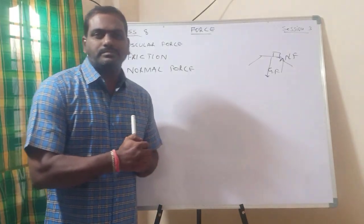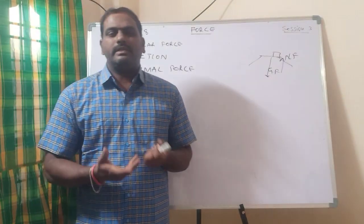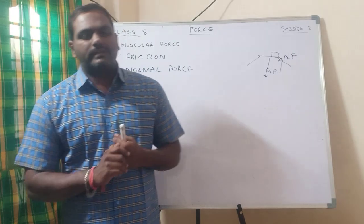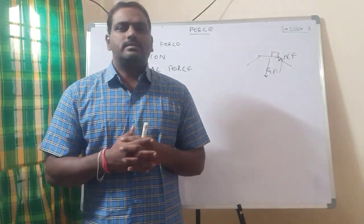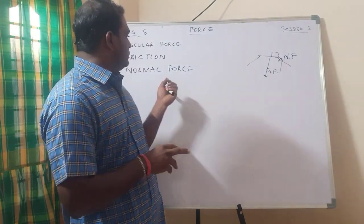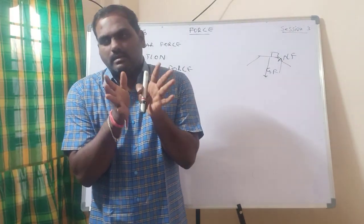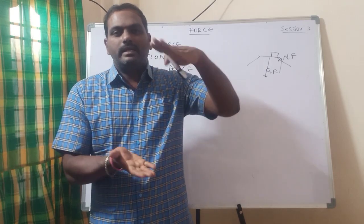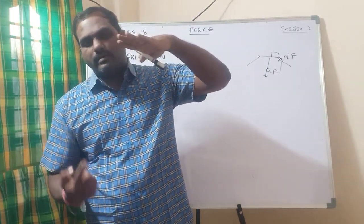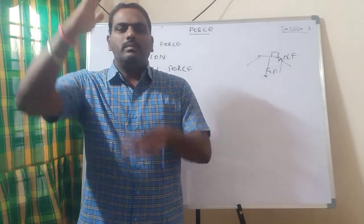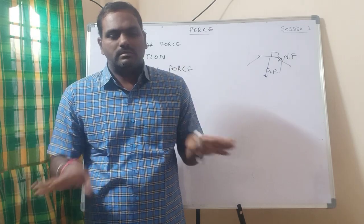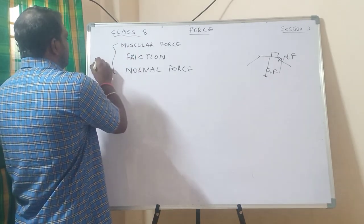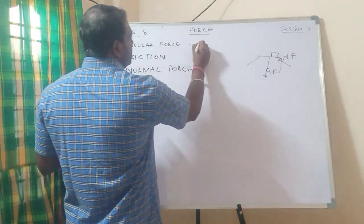Today I explained what muscular force is and what type of activities are related to muscular force. Then I explained friction — what friction is and whether anything is possible without friction. After that I explained normal force — what force acts when an item is in a stable condition and why it remains stable.